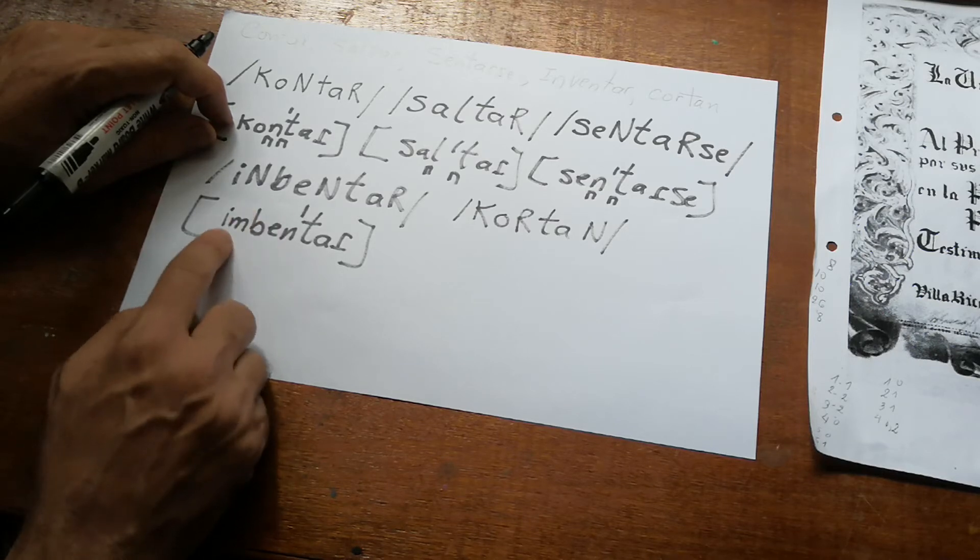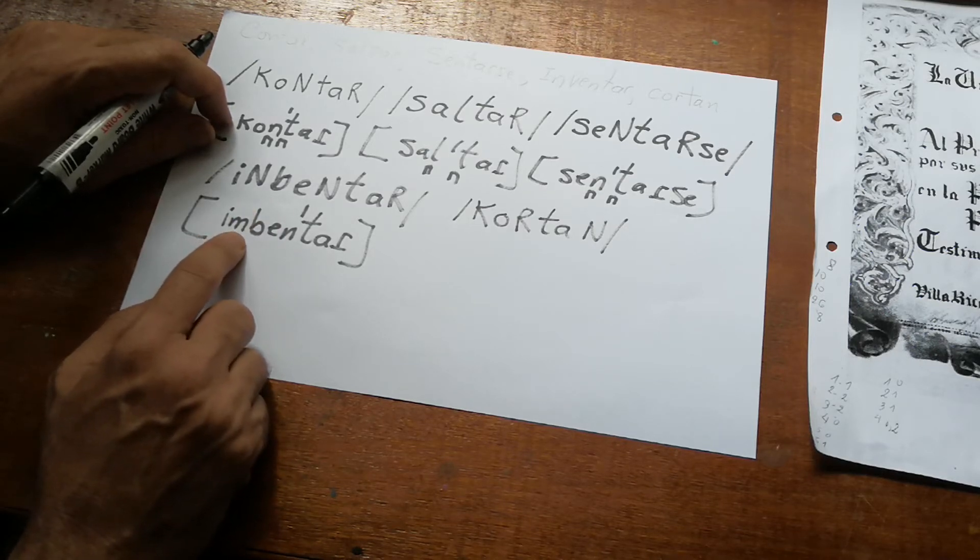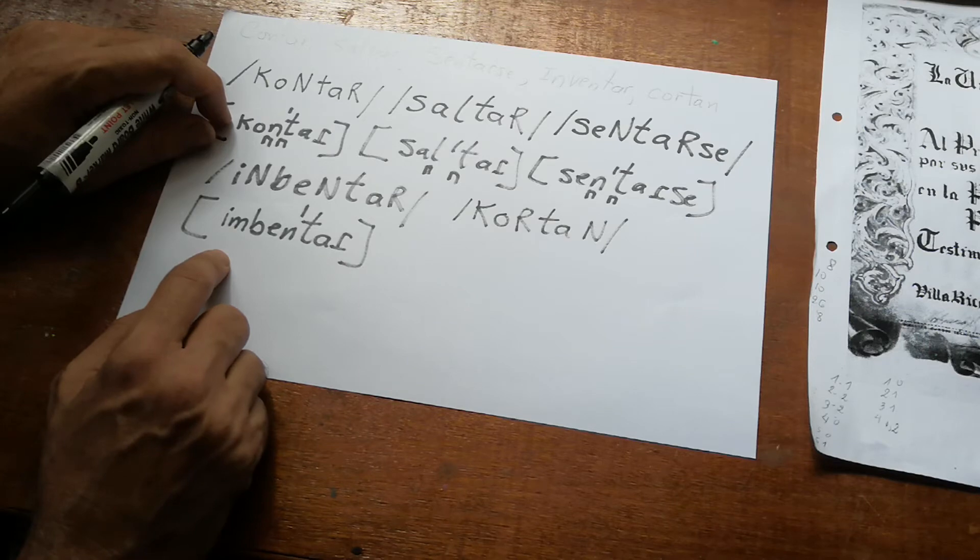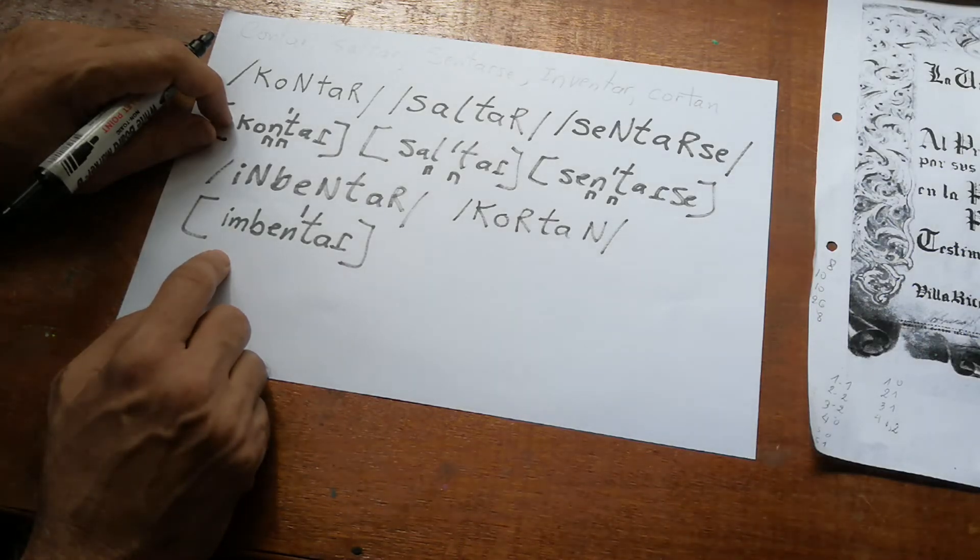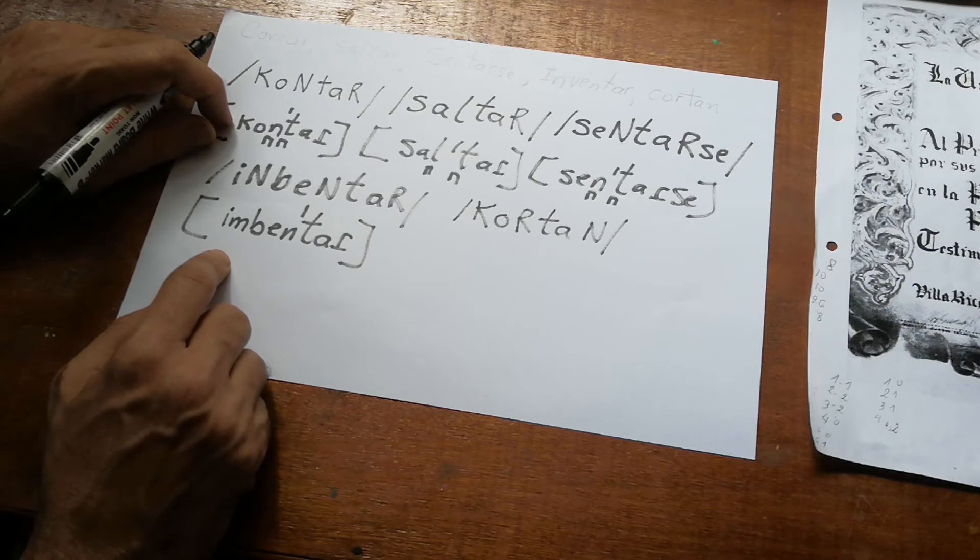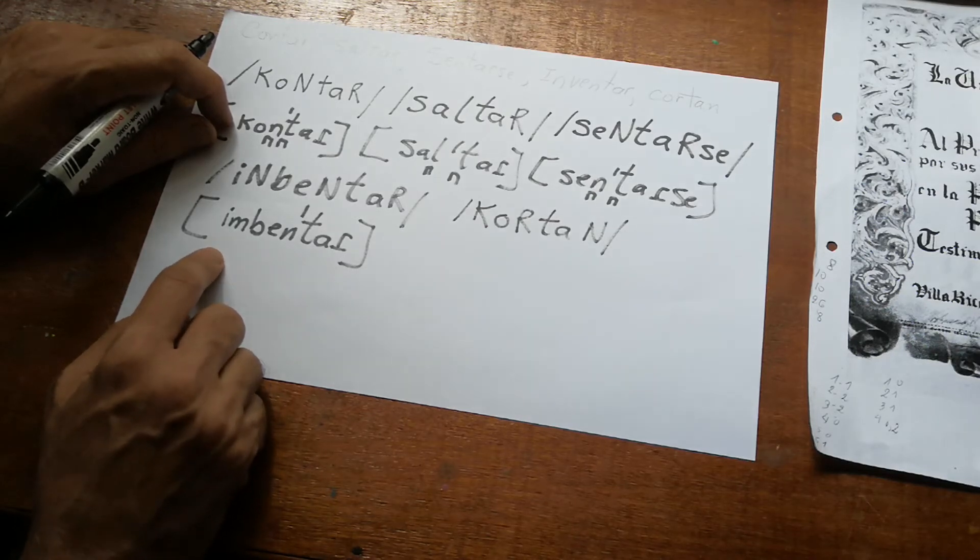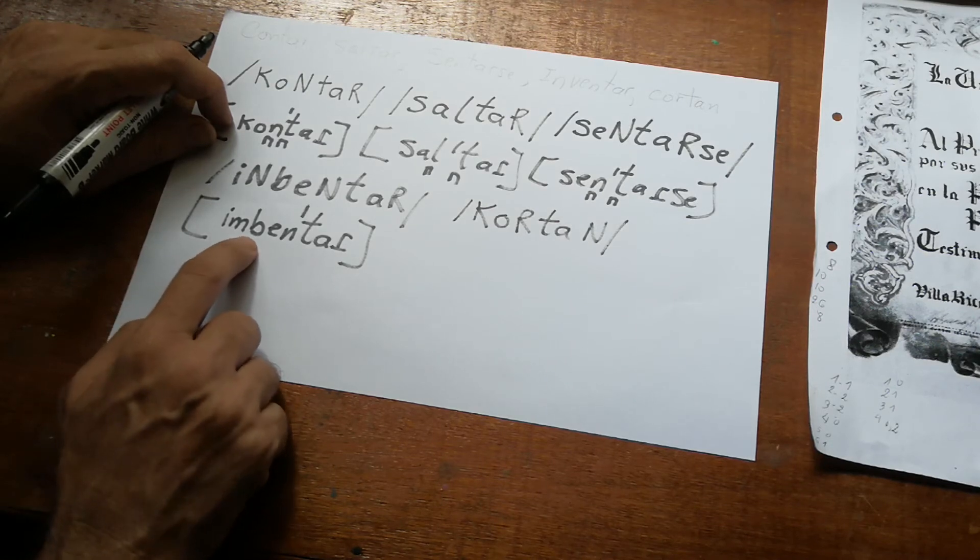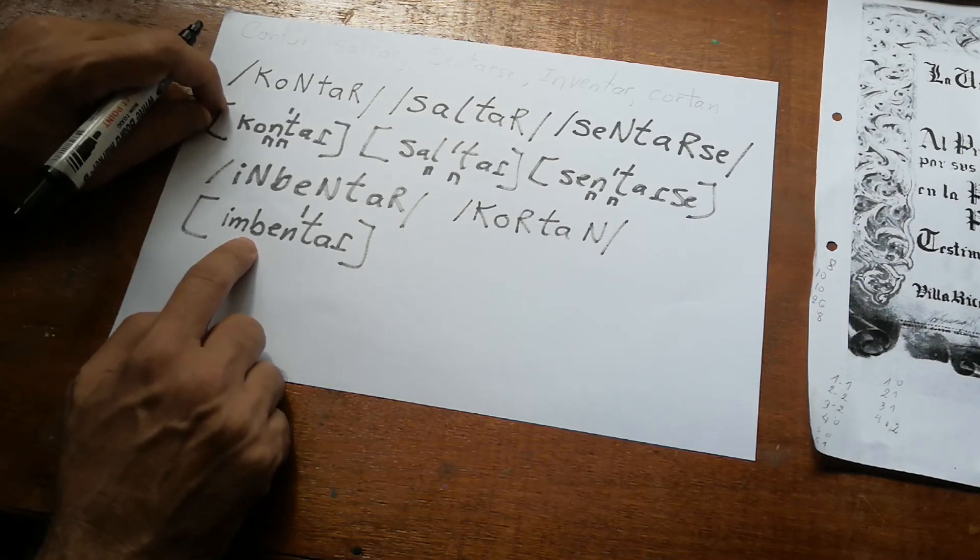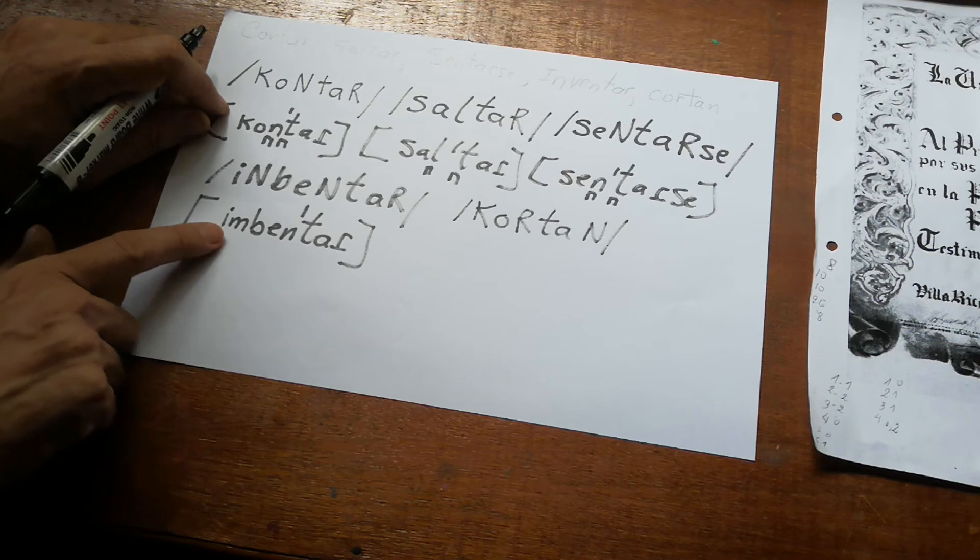Yes, in Spanish, so the same happens when we speak. We say inventar, we never say 'in vent', no, we always say inventar. The B is a strong B because there is a nasal sound before it, so the nasal sound conditions the B to be strong.